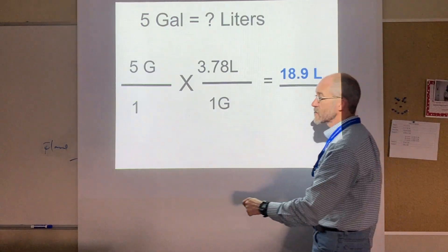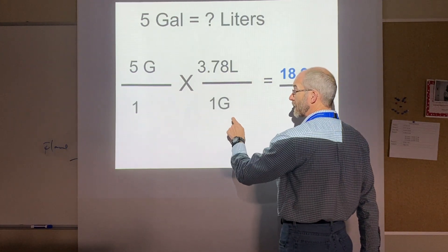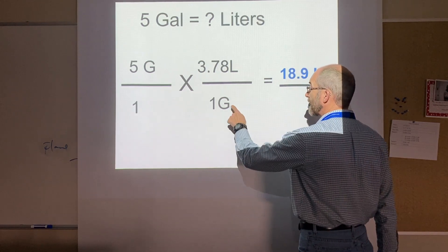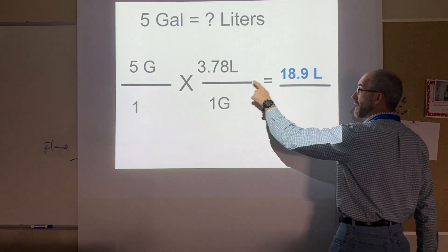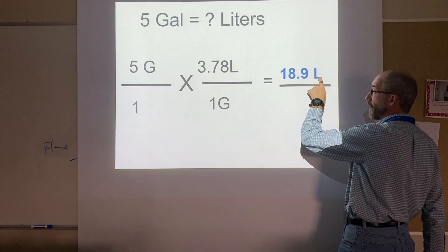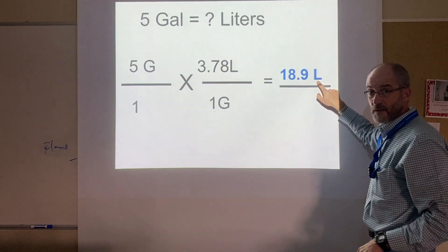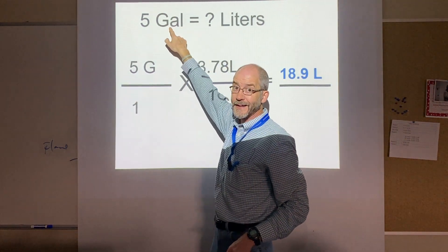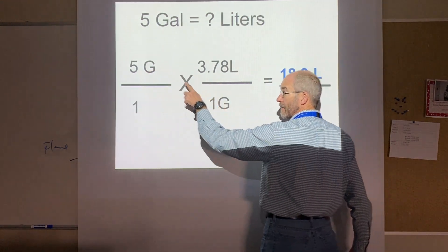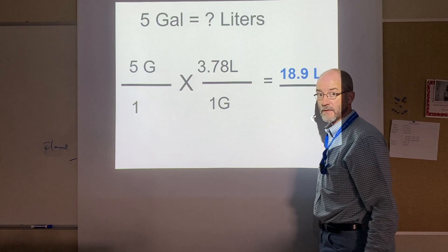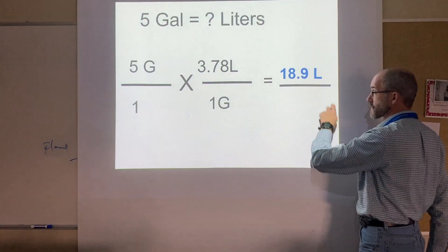So: five gallons over one, times 3.78 liters over one gallon. Gallons cancel out. I multiply and get 18.9 — 18.9 what? Liters. I needed my answer in liters and it is in liters. I was converting from gallons; those units cancel out. That's why it's called the fractional or line method — I get my unit of interest, which was liters. Remember: sometimes your conversion factor will be in the numerator, sometimes in the denominator, depending on how the problem works out.